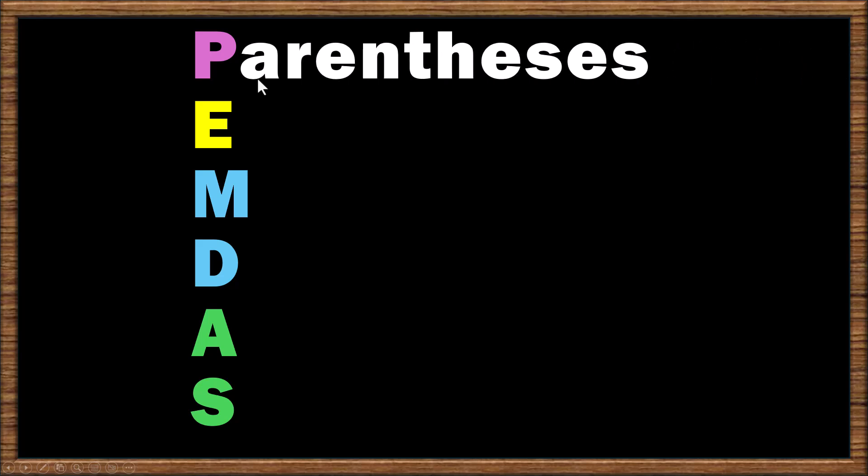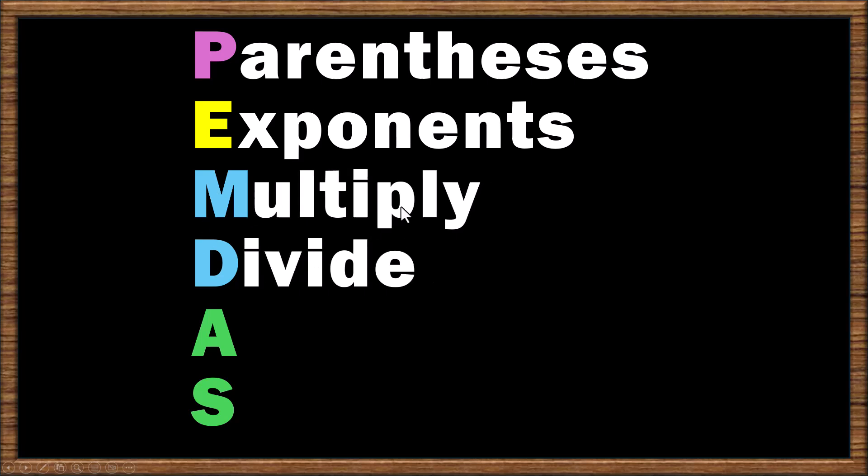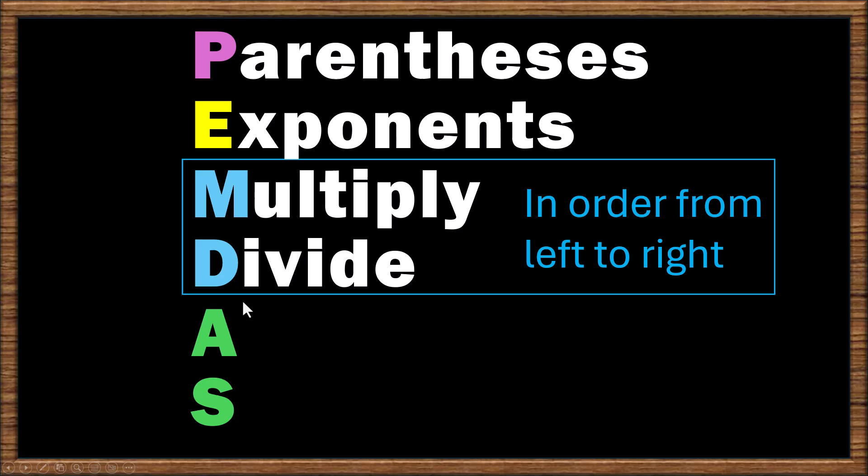P stands for parentheses, which means you're going to do everything that's inside of grouping symbols first. E stands for exponents. Now here's where things start to go kind of wrong, and that is in this multiply, divide, and add and subtract thing. Multiplication does not always come before division. You do multiplication and division before you do adding and subtracting, but you have to do them in order from left to right. So it's possible that you would divide before you multiply. Some people learn this so specifically they think you have to multiply first. That is not true.